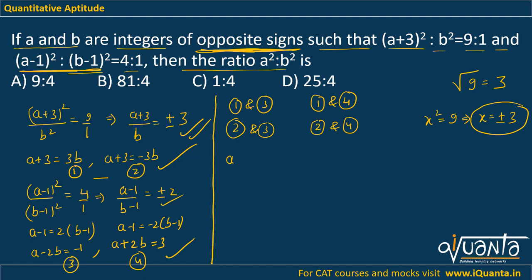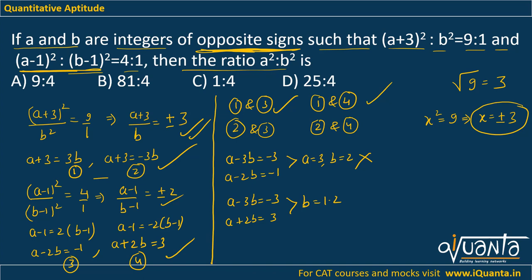Solving equations 1 and 3: a - 3b = -3 and a - 2b = -1 gives a = 3, b = 2. Both are integers but not of opposite signs, so we reject this. Solving equations 1 and 4: a - 3b = -3 and a + 2b = 3 gives b = 1.2, which is not an integer, so we reject this as well.